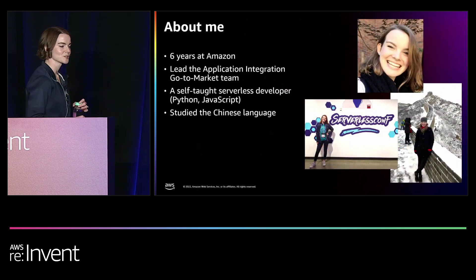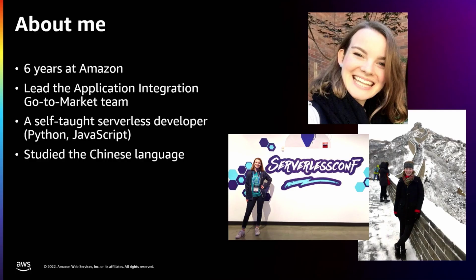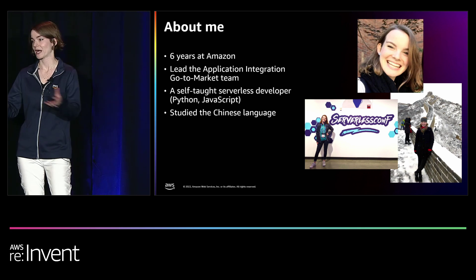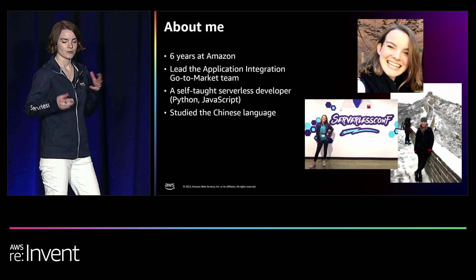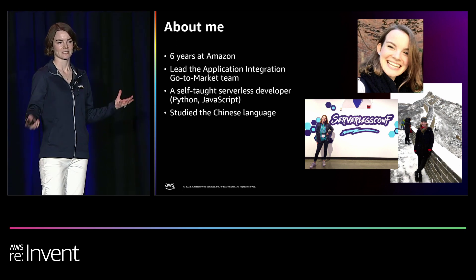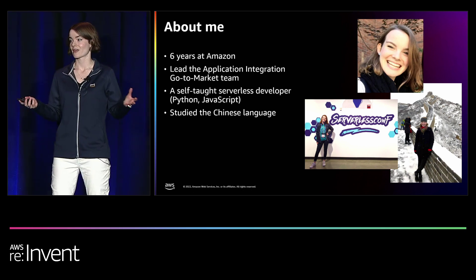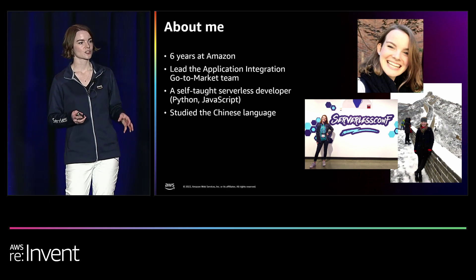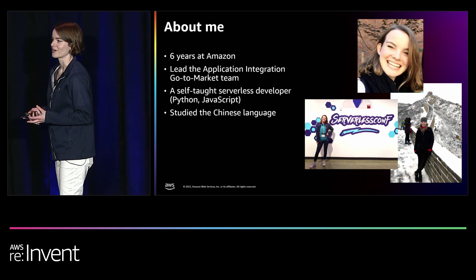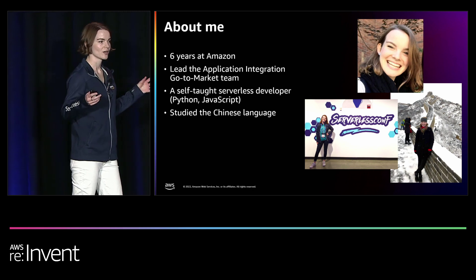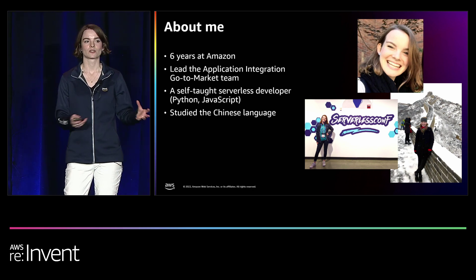A little bit more about me. I've been at Amazon for just over six years, and I currently lead the application integration go-to-market team. I've been in serverless business development for most of my years at Amazon, but I really didn't start out with a tech background. I built that up on my own — studying for my associate SA certification, I thought it'd be more fun to also learn how to code. So I got into Code Academy, learned a little Python and JavaScript, and started building small applications. The one I'm going to focus on today is the one I've been working on the longest, with a couple hundred users.